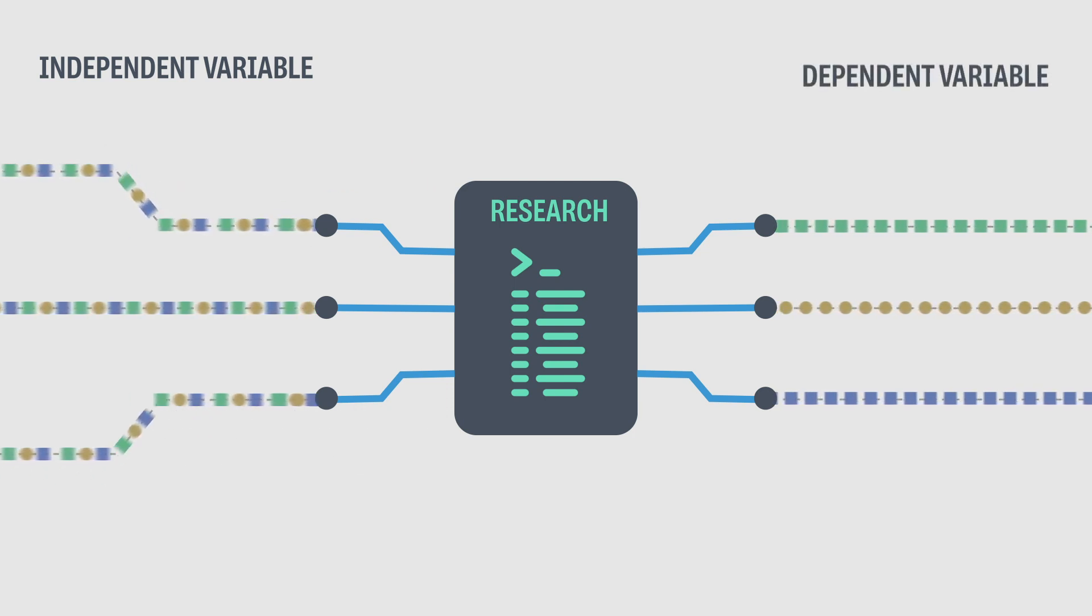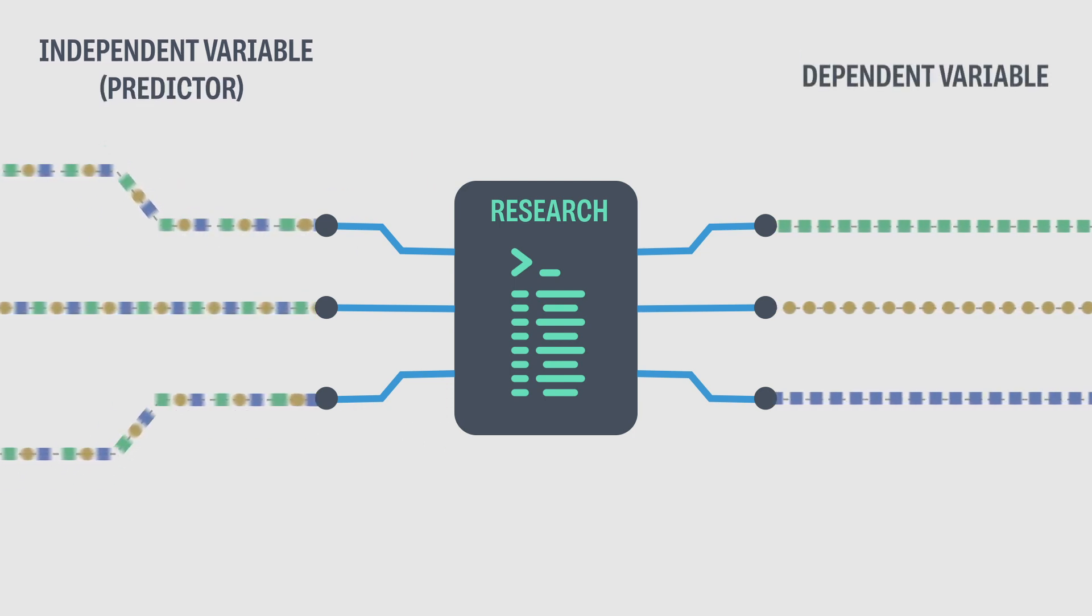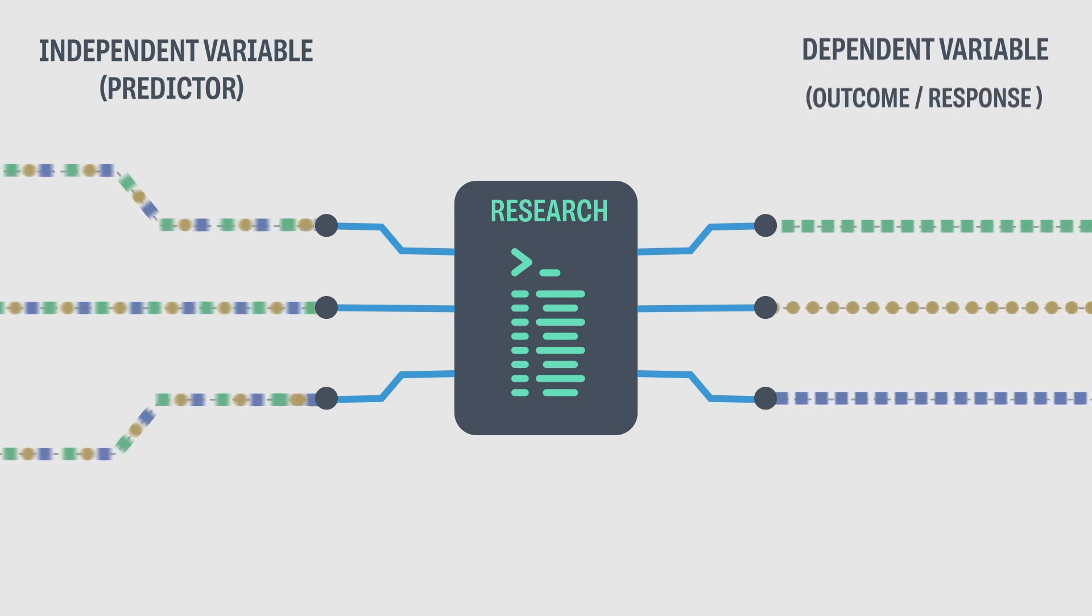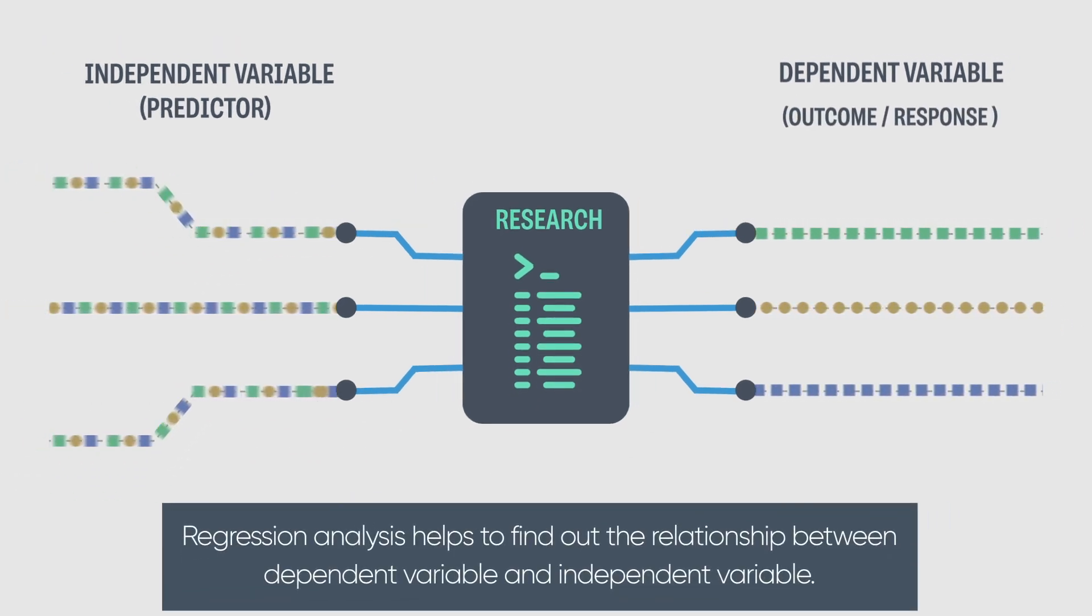Independent variable can be called predictor and dependent variable can be called an outcome or response. Regression analysis helps to find out the relationship between dependent variable and independent variable.